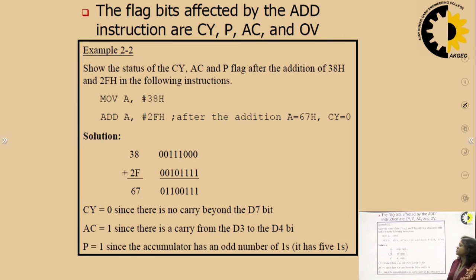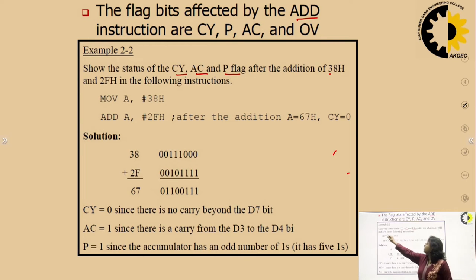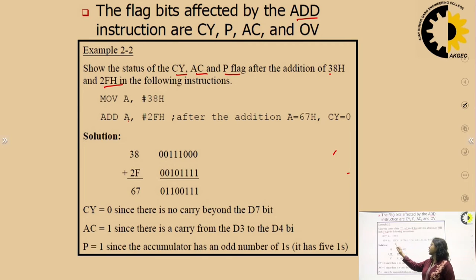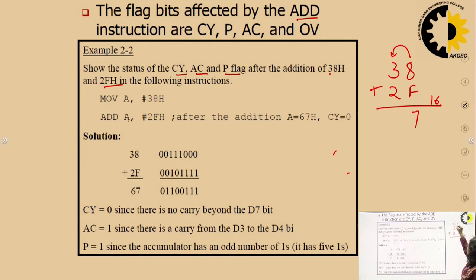We will see some examples to make the value of each flag clear. The operation is ADD, and we have to find the carry, auxiliary carry, and parity flag after the addition of 38H and 2FH. The program is: MOV A, #38H; ADD A, #2FH. The addition: F + 8 = 15 + 8 = 23; 23 is greater than 16, so 23 − 16 = 7 with a carry of 1. The result is 67H.